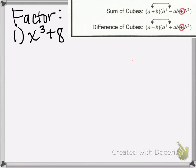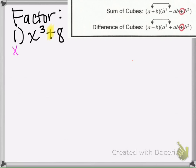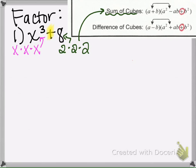If we take a look at this example, we can see that this is a sum because it has a plus sign. So the first thing you're going to do is ask yourself: what times itself three times will result in the first term, x cubed? And what times itself three times will result in eight? So x times x times x will make x cubed, and two times two times two will result in eight. Since we're able to find such numbers, we can utilize the formulas. Because this is a sum, we're going to use the top formula — it says a and b. So we're going to let a be x and let b be two.